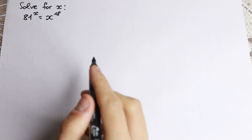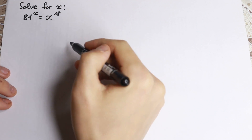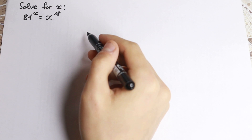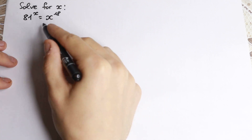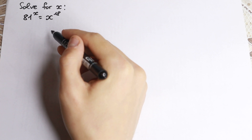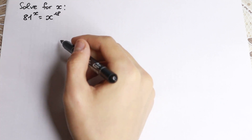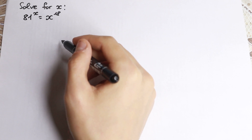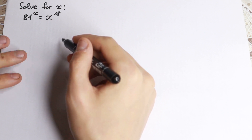Hello everyone, happy to see you here and welcome back to my Maths channel. Today we have a really interesting exponential equation: 81 to the x equals x to the power 18. A lot of students try to solve it by inspection, but it's really hard. In this video I'm going to show you three best approaches to solve it, and I hope you will enjoy these approaches until the end of the video.